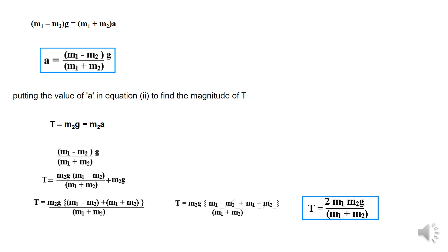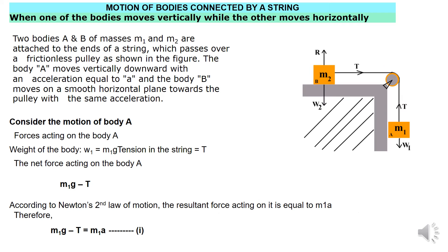Now, when you substitute the value of acceleration in any one of the equation, you will get tension and the value of T will be two times the product of the two masses M1 and M2 over the sum of two masses M1 plus M2, the whole times G. As you can see over here.